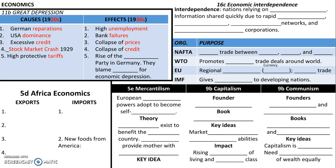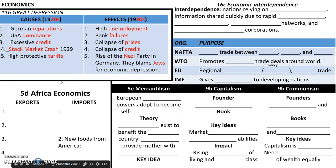Probably the most significant outcome of the Great Depression was the rise of the Nazi party in Germany. And of course, if you know anything about the Nazis, they blamed Jews for the economic depression. That finishes our lesson on the Great Depression. Please do the sort that goes with it and then take the practice quiz.